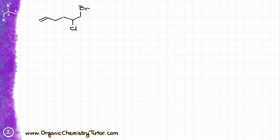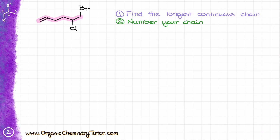The first rule in any nomenclature is to find the longest continuous chain containing the maximum number of your functional groups. In this particular case, it's going to be pretty straightforward — I have my longest continuous chain right here. Then we need to number our chain, and we give priority to the double bond rather than other substituents. So in this case, I start numbering from the left: carbon one, two, three, four, five, and six.